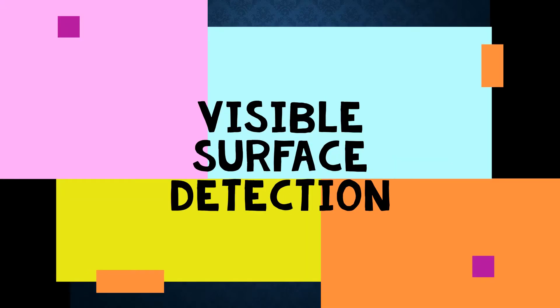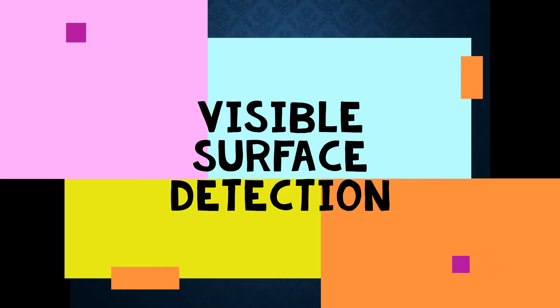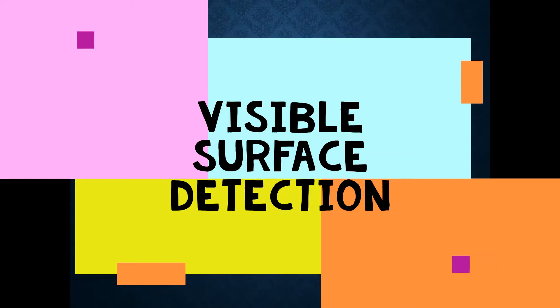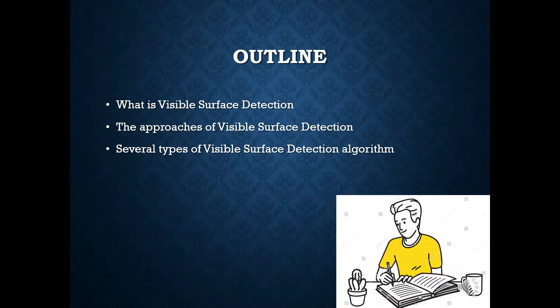Hi student, welcome back to the subject Computer Graphics. For today, the topic is on visible surface detection. Here is the topic outline for today's topic, which is at the end of the chapter. I hope that you'll be able to understand what visible surface detection is, how to distinguish the approaches, and understand the several types of visible surface detection algorithms.